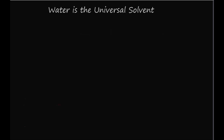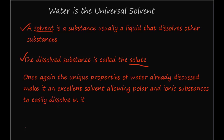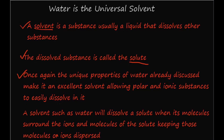Before reviewing why water is called the universal solvent, let's review the definition of a solvent and a solute. A solvent is a substance, usually a liquid, that dissolves other substances. The dissolved substance is called the solute. Many of the unique properties of water already discussed make it an excellent solvent, allowing polar and ionic substances to easily dissolve in it. A solvent such as water will dissolve a solute when its molecules surround the ions and molecules of the solute, keeping those ions or molecules dispersed.